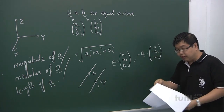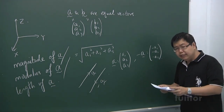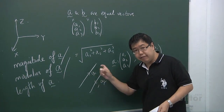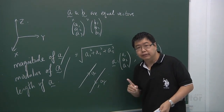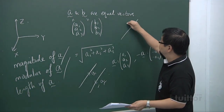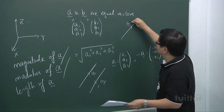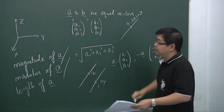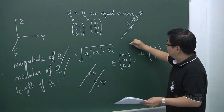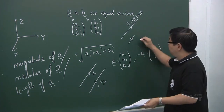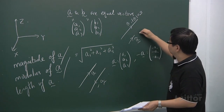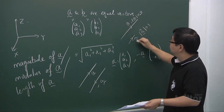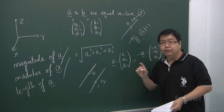The next important concept is unit vectors. Unit vectors follow the direction of the vector but the length is only one unit. For example, if vector A has length — modulus A — of three units, then the unit vector is a vector in the same direction as A but with a length of exactly one unit.